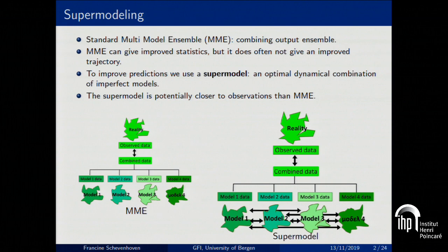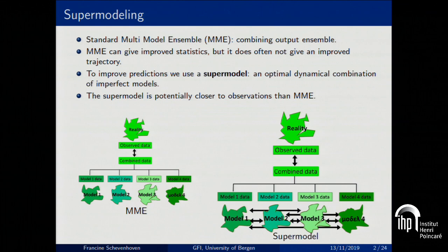You are probably familiar with the standard multimodal ensemble approach. It's often used in operational forecasts. It just means that if you have a couple of imperfect models, like in this left figure, you run your individual models independently and then combine their output afterwards. This is often very helpful because model errors tend to average out. For example, when one model is too warm, the other model is too cold.